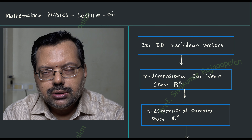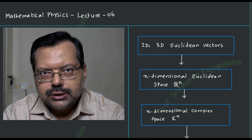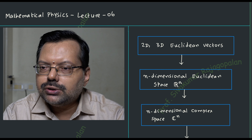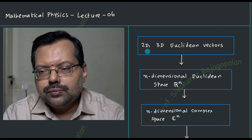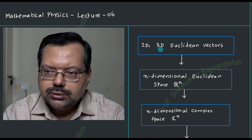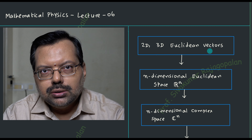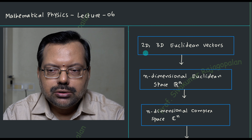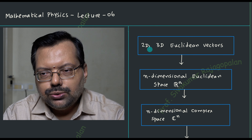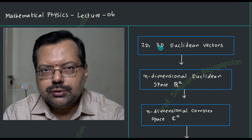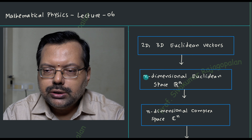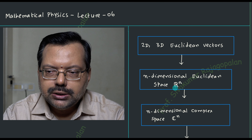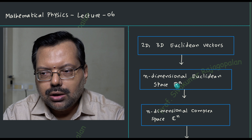So that is today's learning objective, and inner product is nothing new for you, because starting from the Euclidean geometry, if you start with the two-dimensional and three-dimensional Euclidean space, you have the 2D and 3D vectors. If you increase the number of components — two components for two-dimensional, three for three-dimensional — and if you increase to n, we say it is going to be an n-dimensional Euclidean space, which we denote by the symbol Rn.